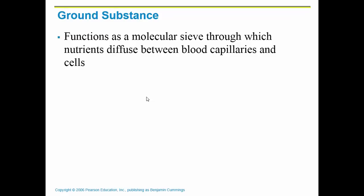Ground substance basically functions as a molecular sieve, so things can actually diffuse through it. We can have diffusion getting nutrients to the cells and getting waste out of the cells. That diffusion occurs at the ground substance portion, with capillaries or blood vessels making sure that nutrients are getting where they need to go and waste is getting out.